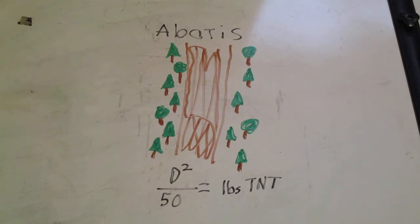The calculation for determining how much explosives you need is D squared over 50 equals pounds of TNT. D is the diameter of the tree. So we go through here and find we have say 20 trees that are around 24 inches in diameter.